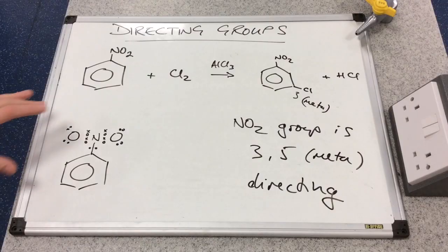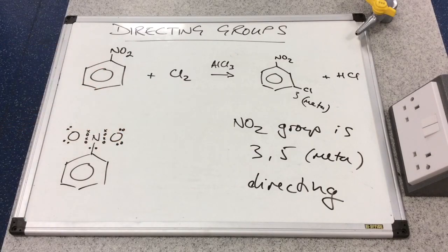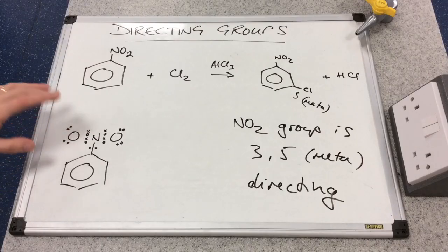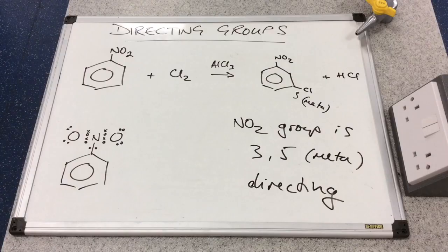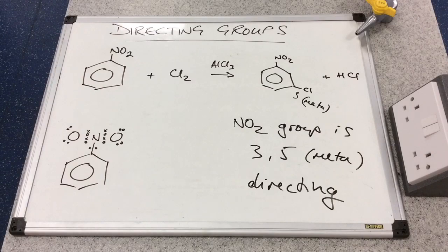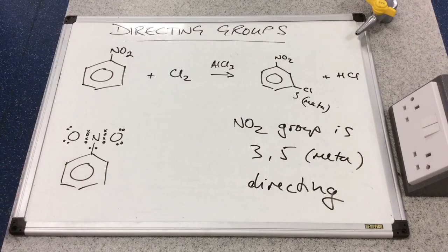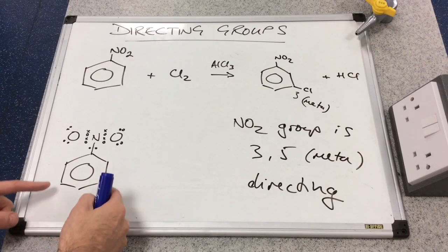To explain this, a dot-and-cross diagram shows that the nitrogen in the nitro group does not have a lone pair. Unlike the OH and NH2 groups, it cannot donate electrons into the pi cloud. Instead, it withdraws electron density away from the pi electron cloud — specifically from positions 2, 4, and 6. This leaves positions 3 and 5 with relatively higher electron density, so substitution takes place there.